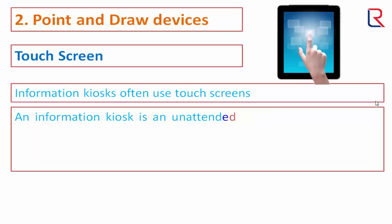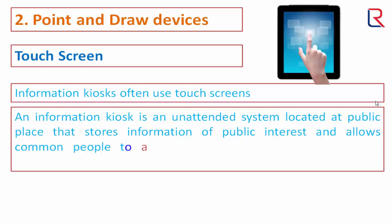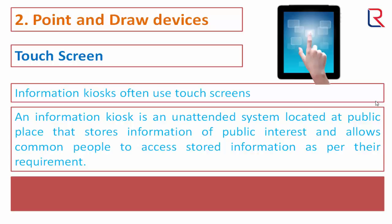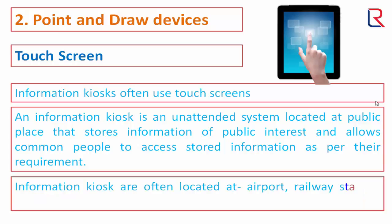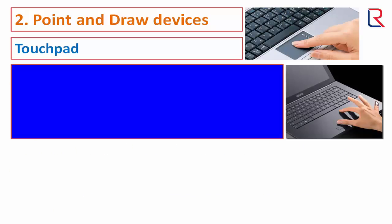Information kiosks often use touch screens. An information kiosk is an unattended system located at a public place that stores information of public interest and allows common people to access stored information as per their requirement. Information kiosks are often located at airports, railway stations, banks, ATMs, etc.